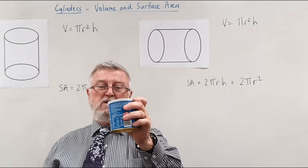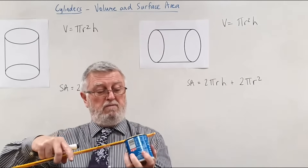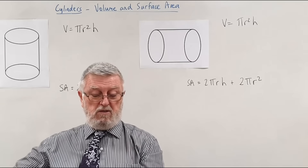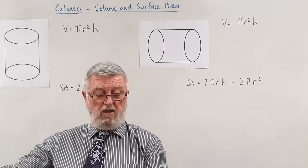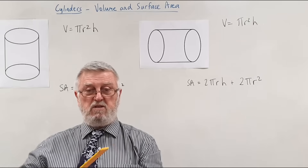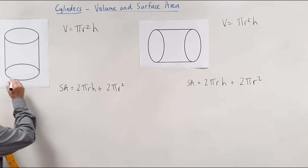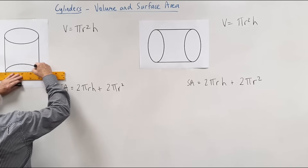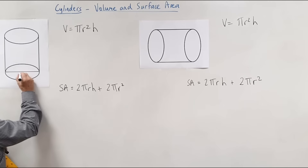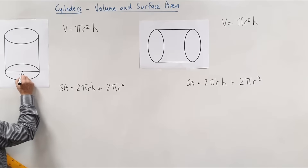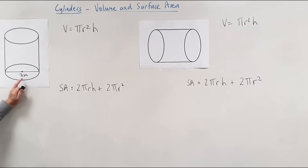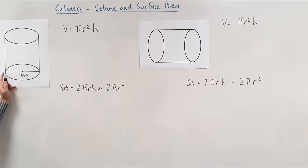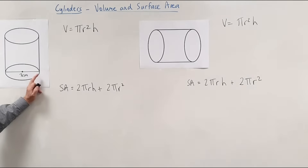I'm going to measure this one roughly. Across the bottom it's about eight centimeters — or maybe seven centimeters, so the numbers will be nicer. If I draw it up here, across the bottom and across the top, the diameter is about seven centimeters. All the way from one side to the other is called the diameter, and we call it D.